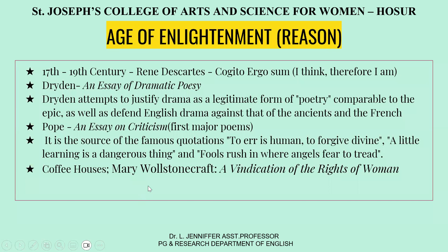When we move to the Age of Enlightenment, that is the Age of Reason, in the 17th to 19th century, the most important phrase of the period is René Descartes' cogito ergo sum, which means 'I think, therefore I am.' We also have John Dryden, whose important critical piece is An Essay of Dramatic Poesy, where he attempts to justify drama as a legitimate form of poetry comparable to the epic, and defends English drama against that of the ancients and the French.